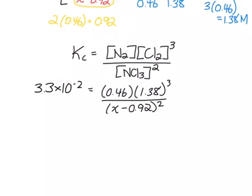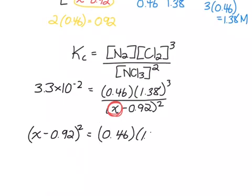Now we're trying to solve for this value, so we need to move that onto its own side of the equation. So we're going to rearrange this as x minus 0.92 all squared is going to equal 0.46 times 1.38 cubed divided by our equilibrium constant.